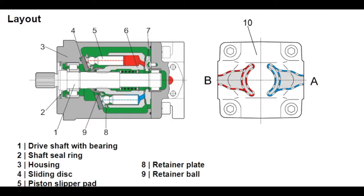The angle of the sliding disc is determined by the housing (3), and thereby the pistons (5) perform a stroke movement while turning. Pressure on the piston causes it to pass down through the angled sliding disc and catch the cylinder (6). The cylinder rotates with the drive shaft, producing output torque.